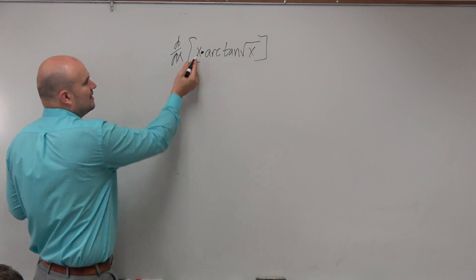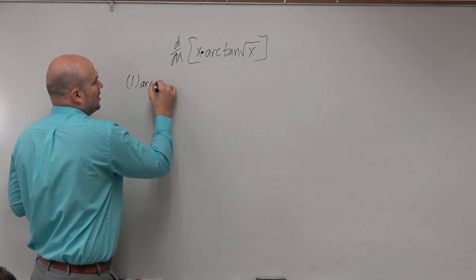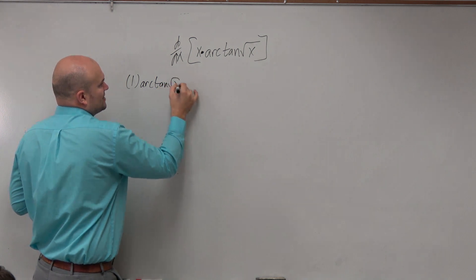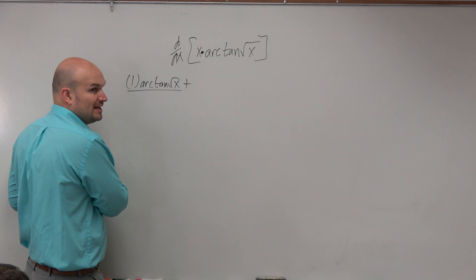And that's important, because if I want to find product rule, the first thing is going to be 1 times arctan square root of x. Well, there's nothing I can really do there. That's just going to remain there. That's it. Done.